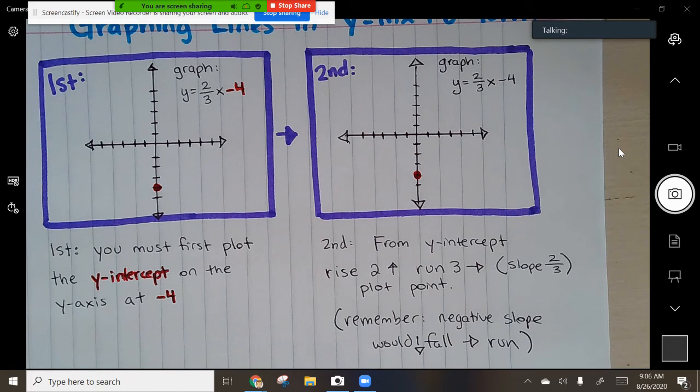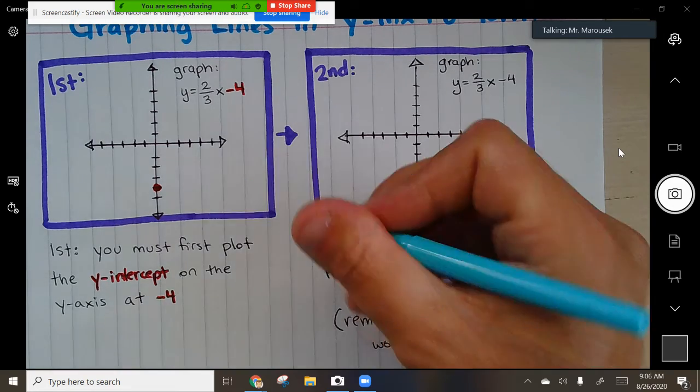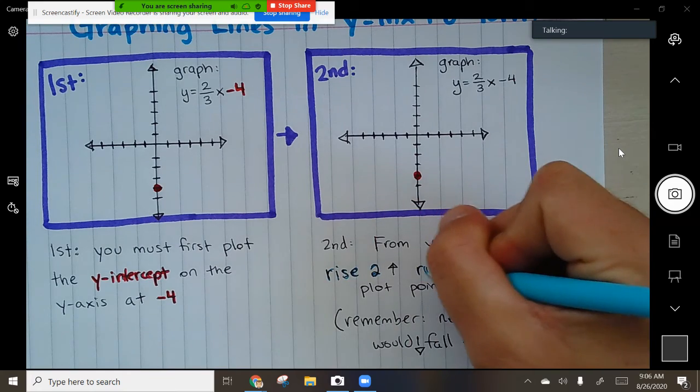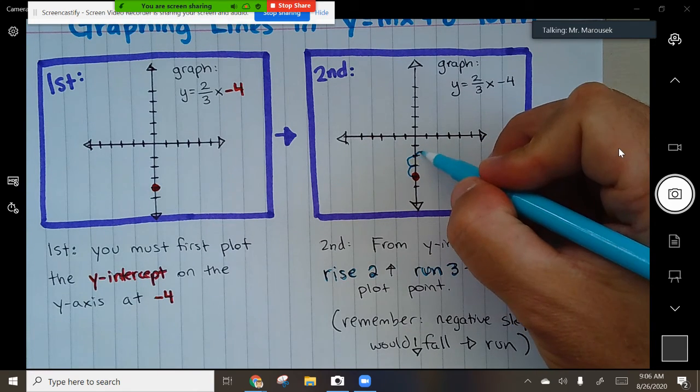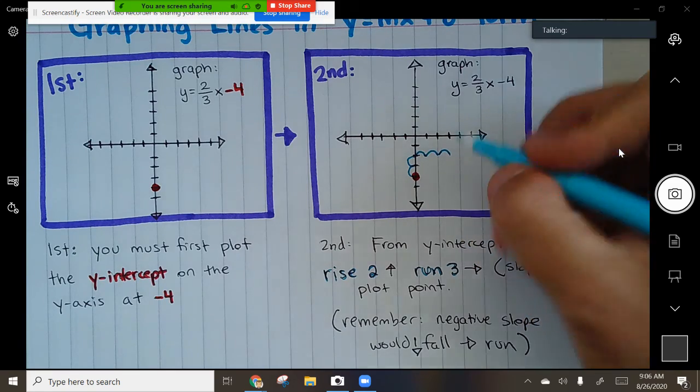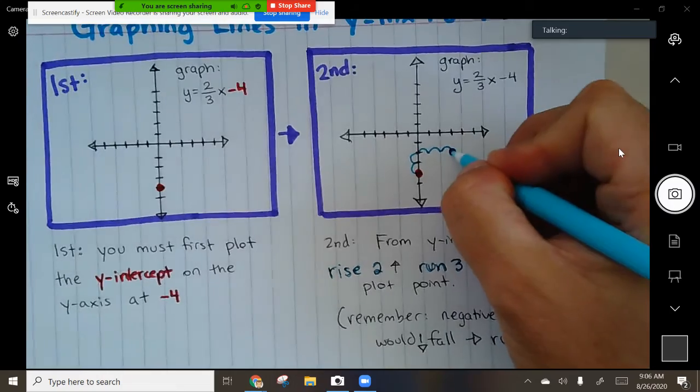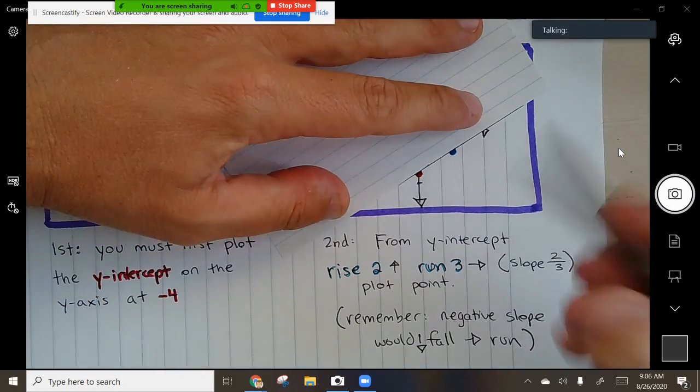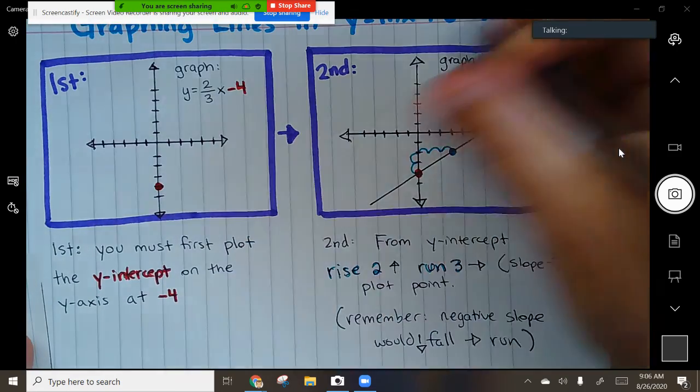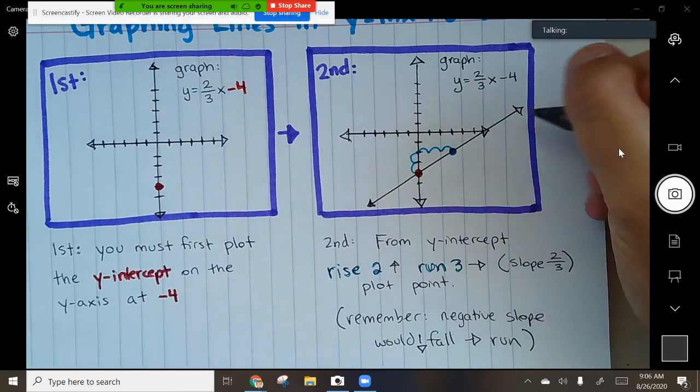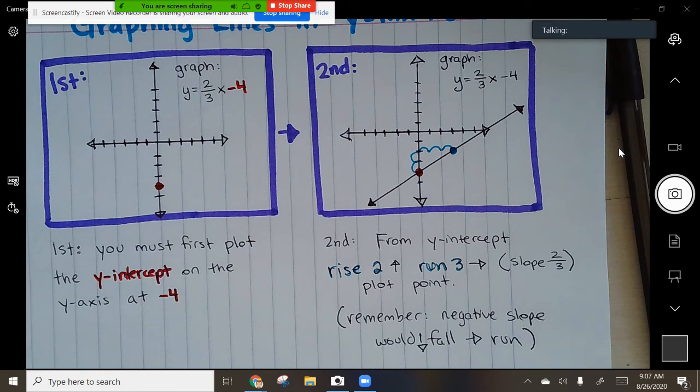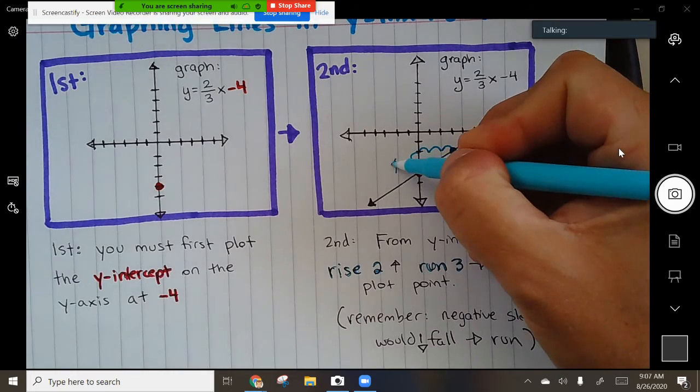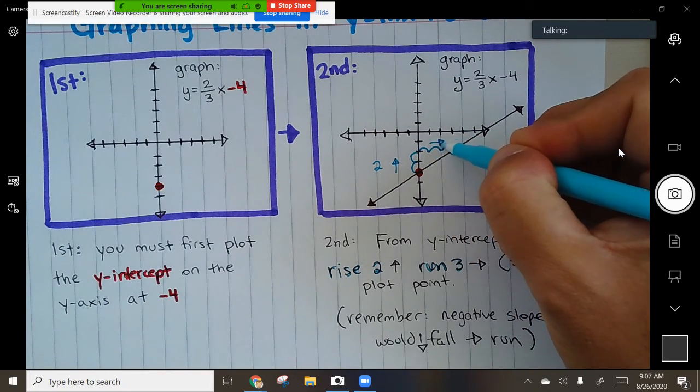Okay, so now, we're going to rise and run. So I'm going to see if I can, you can see what I'm going to do. I'm going to rise 1, 2, run 1, 2, 3. There's my new point. And then we can take a ruler.